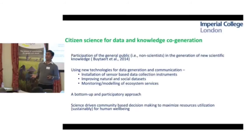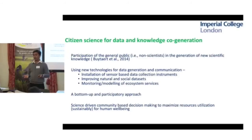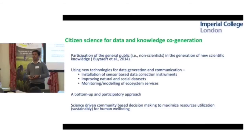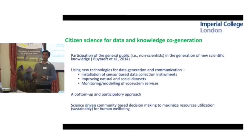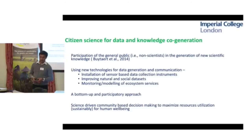We can install various sensor-based instruments for data collection, improving natural datasets. We can apply this data for monitoring as well as modeling of various ecosystem services. Citizen science is a bottom-up approach: we mobilize local communities and stakeholders to collect data and improve knowledge. It is basically science-driven, community-based decision making to maximize resource utilization for human well-being.